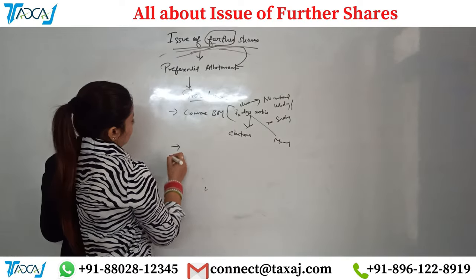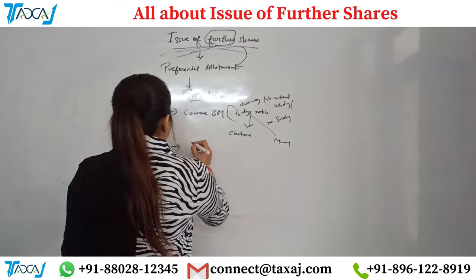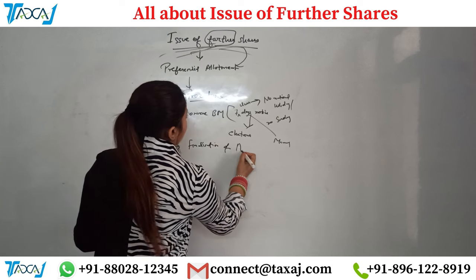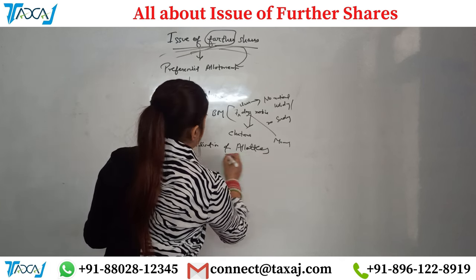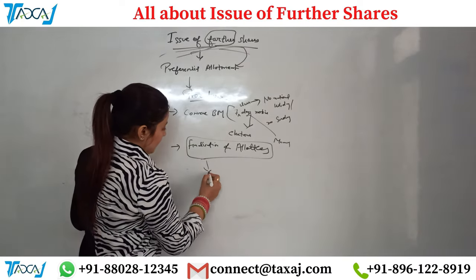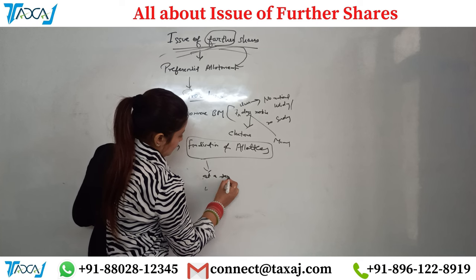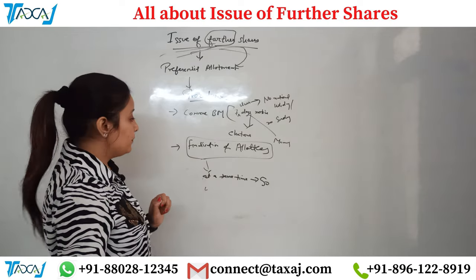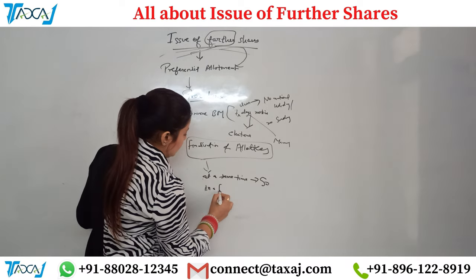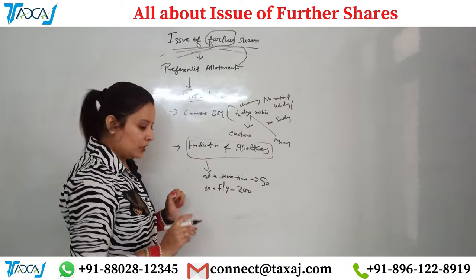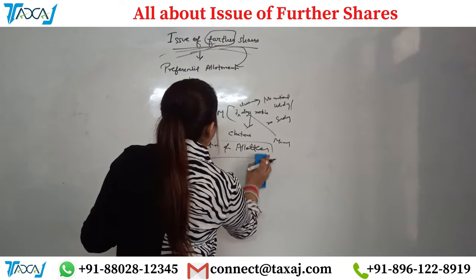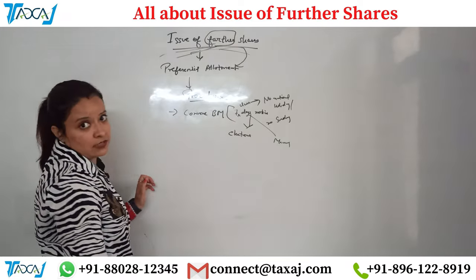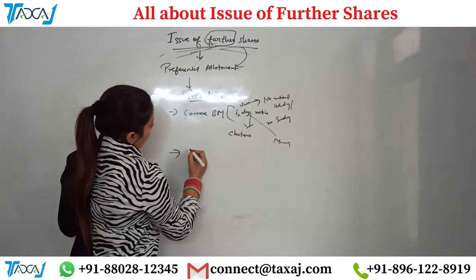After convening the board meeting, you finalize the allottees — how many shares and to how many people. One very important point: you cannot allot shares to more than 50 people at the same time in a preferential allotment. Also, in a complete financial year, it should not exceed more than 200 allottees. So when finalizing allottees, if you want to allot to more than 50 at the same time, you cannot — the maximum at one time is 50.